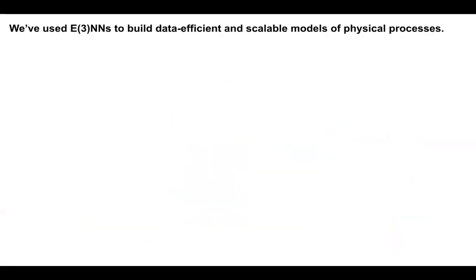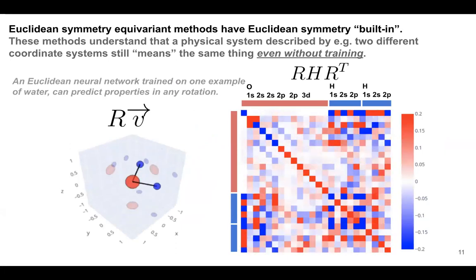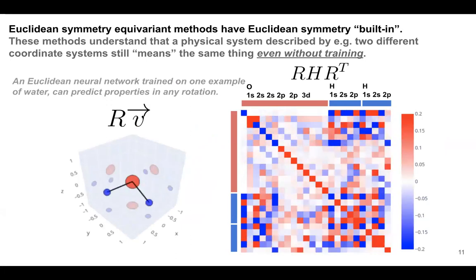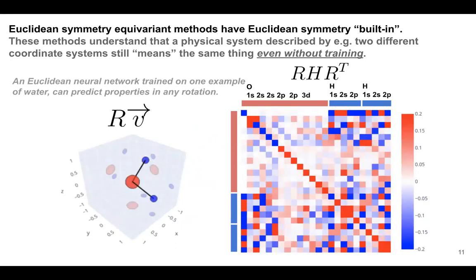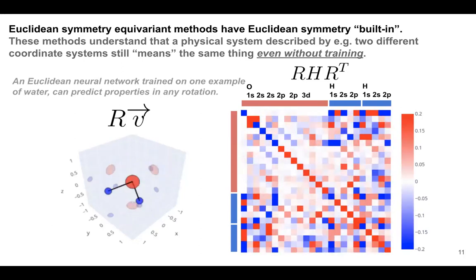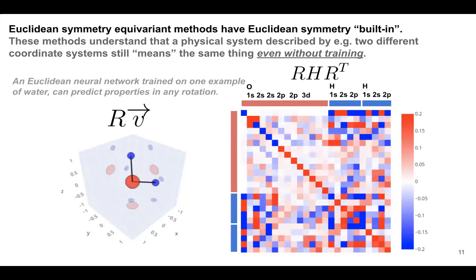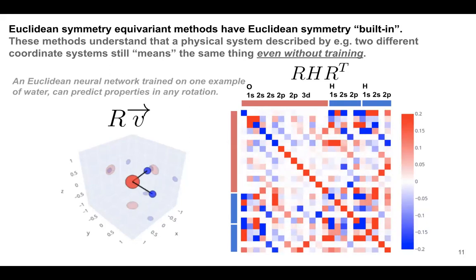On the water molecule example: if I put in the water molecule in a particular orientation and predict its Hamiltonian, rotating the water molecule will cause the output Hamiltonian to also rotate correspondingly. But in the network there are no explicit rotation operations — we only use rotations when testing equivariance. Equivariance is achieved purely by ensuring our multiplication operations and non-linearities preserve the structure of the Euclidean symmetry group.